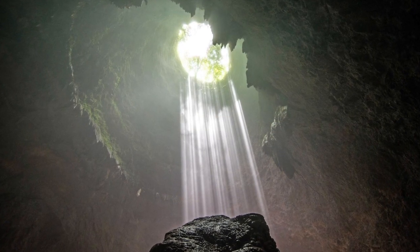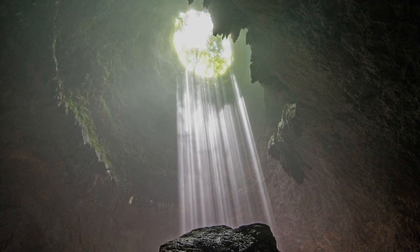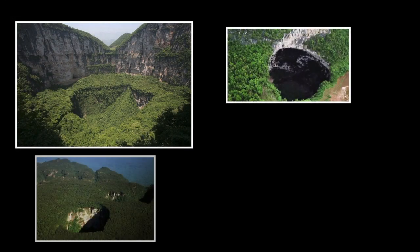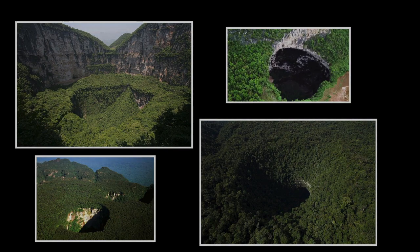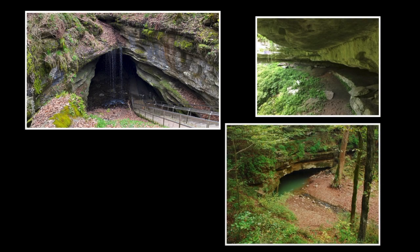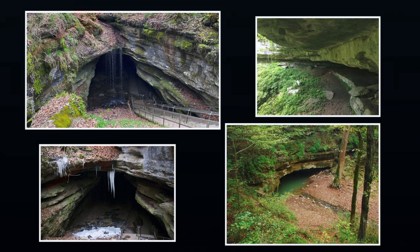Occasionally, a sinkhole may exhibit a visible opening into a cave below. In the case of exceptionally large sinkholes, such as the Minye Sinkhole in Papua New Guinea, or Cedars Sink at Mammoth Cave National Park in Kentucky, an underground stream or river may be visible across its bottom flowing from one side to the other.